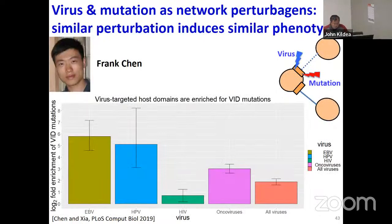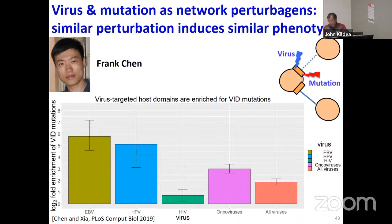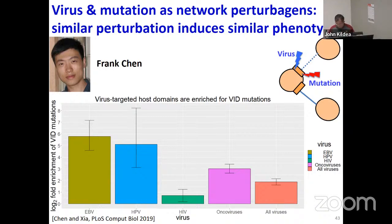Work by Frank Chen links different types of perturbation mechanisms. The interactome can be perturbed either by mutations or by viruses—different types of perturbations. The interesting question is: if a viral perturbogen and a mutational perturbogen perturb the same site of the interactome, do they give the same consequences even though they're different types of perturbations? It turns out the answer is yes. All that matters is which site of the interactome you're perturbing. If they're perturbing the same site, you get the same phenotypes regardless of whether it's a virus or a mutation doing the perturbing.